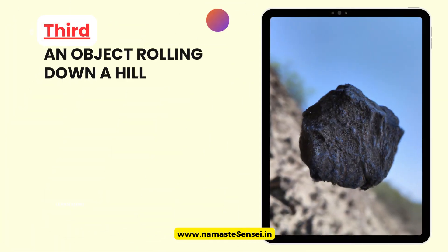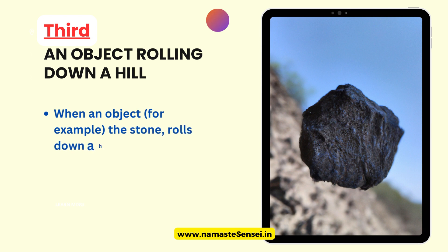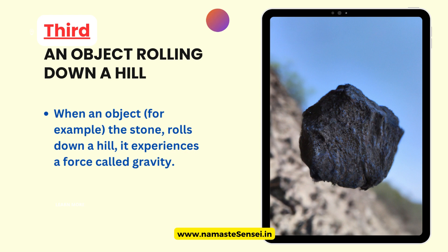Third, An Object Rolling Down a Hill. When an object — for example, a stone — rolls down a hill, it experiences a force called gravity that causes it to accelerate down the hill.